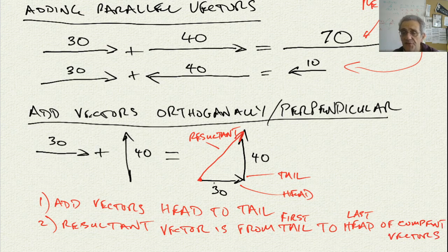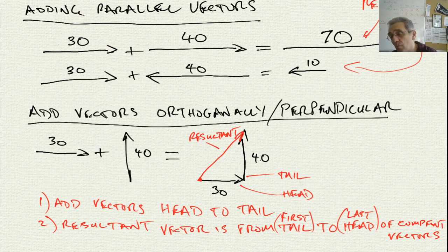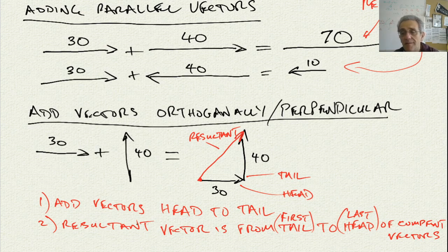In other words, from the first tail to the last head. Now, in this case we're only adding two vectors, but we could be adding more than two — there are situations where that can occur as well. Having said this, there is more than one way to add vectors and still get the correct answer.